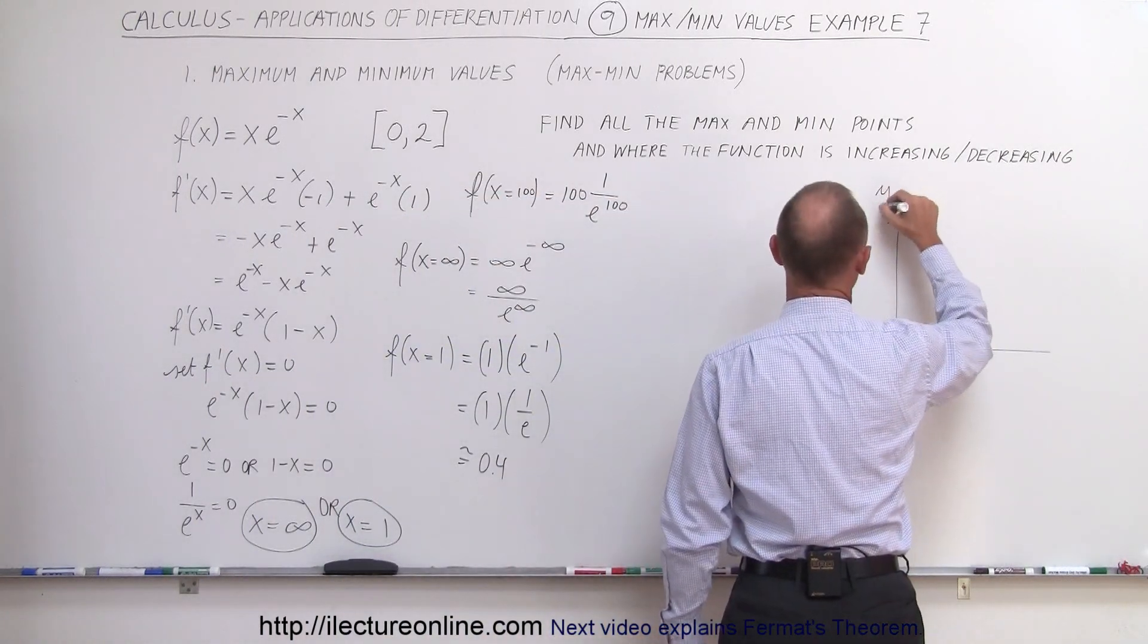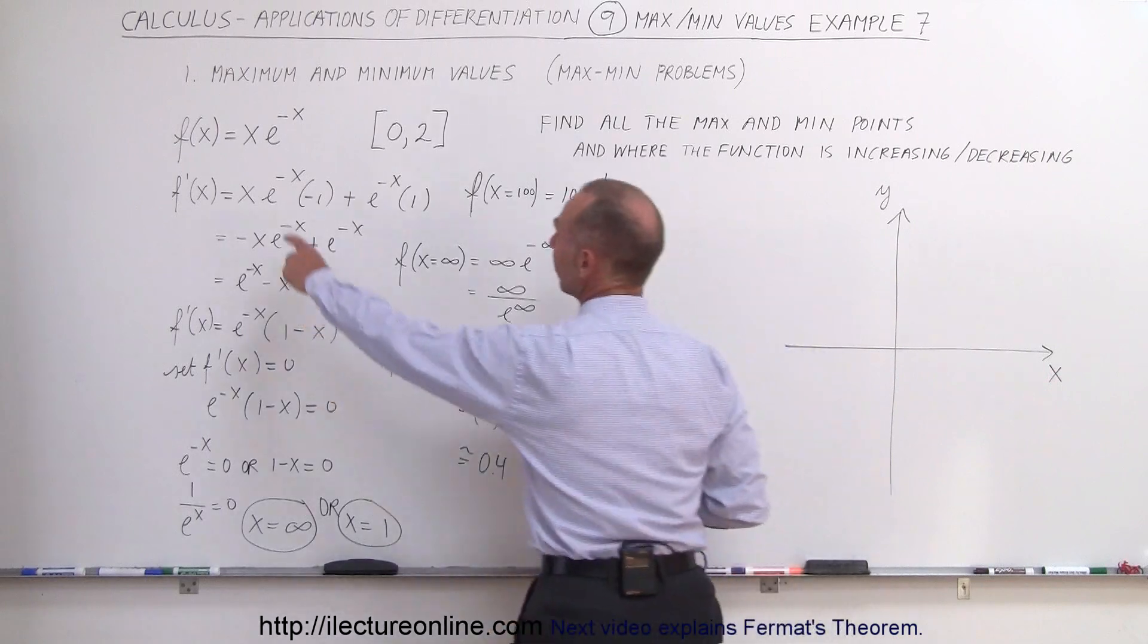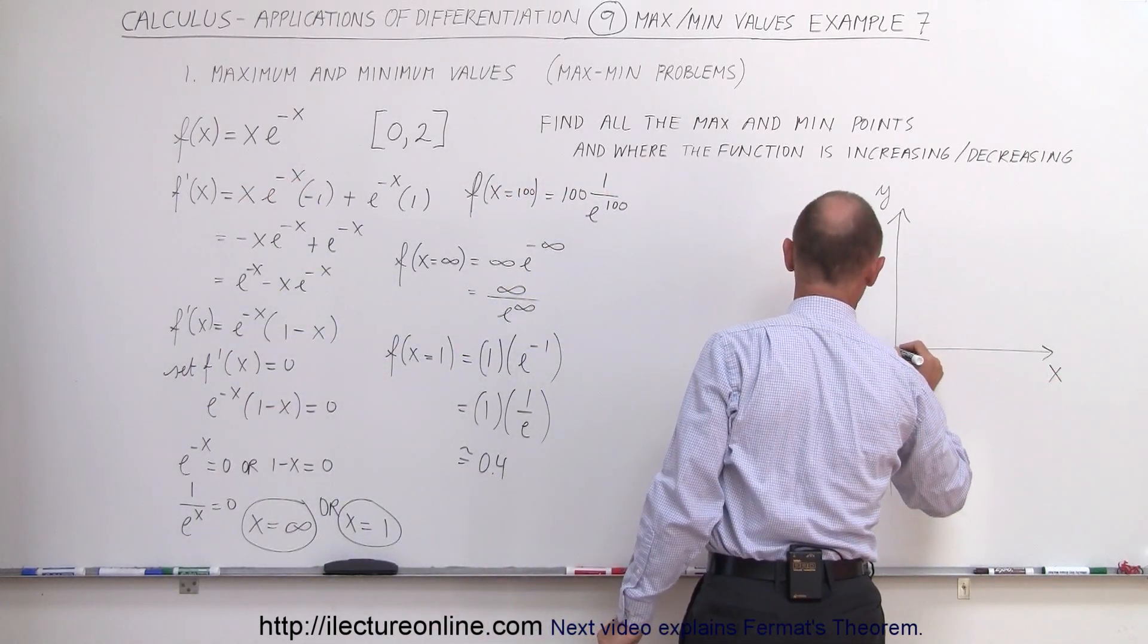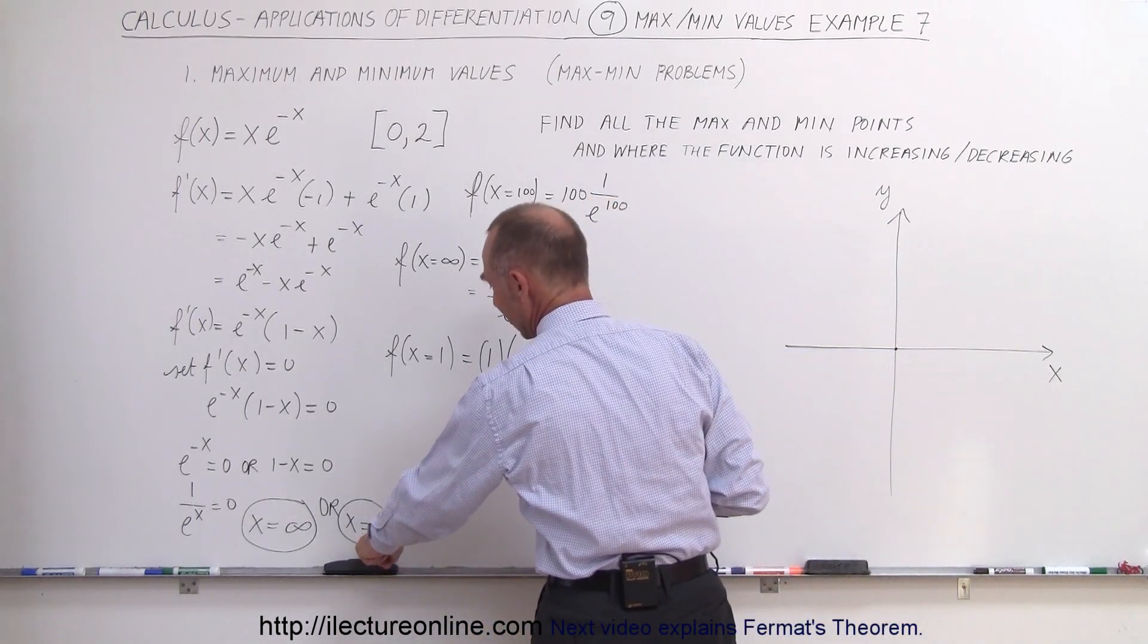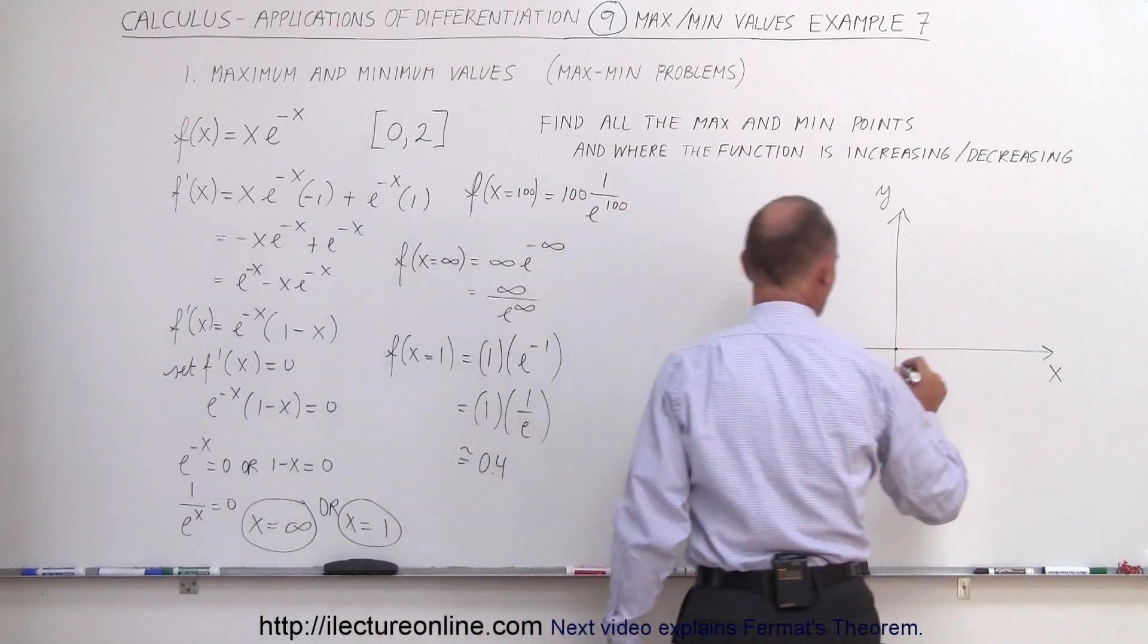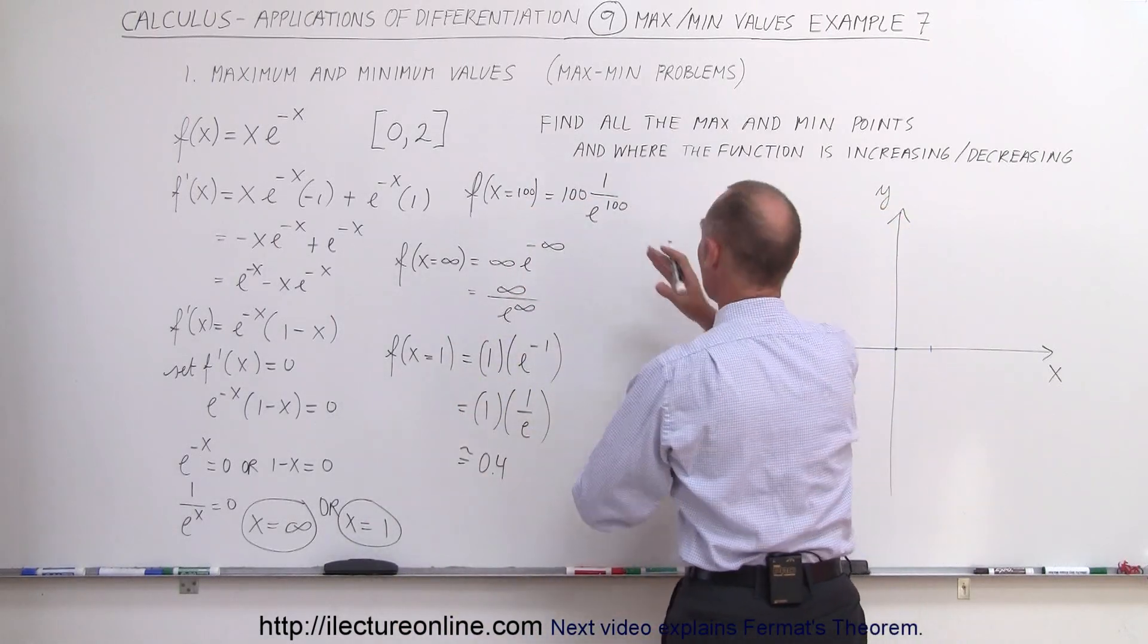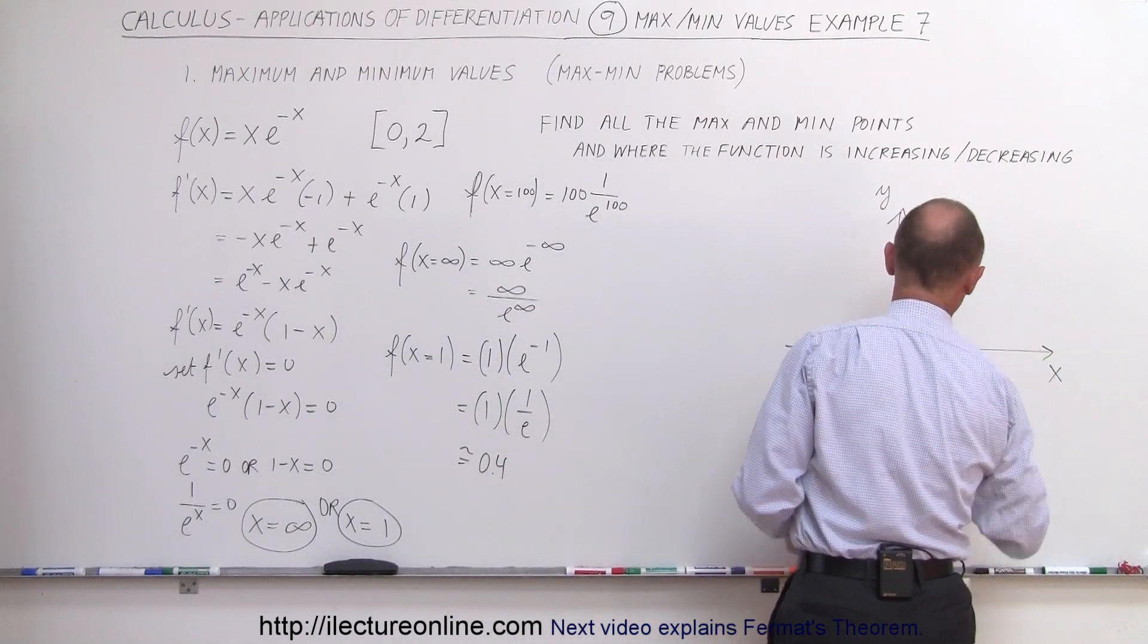Here's our y-axis, here's our x-axis. First, when x = 0, y = 0 - that's this point right here. We notice we have a maximum value at x = 1. When x becomes very large, the function approaches 0 again, so asymptotically it gets back to 0.